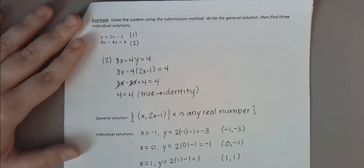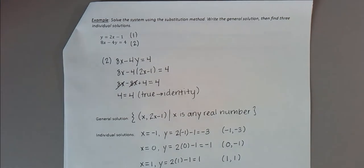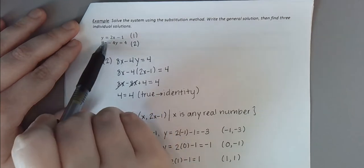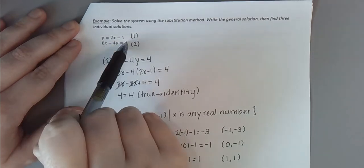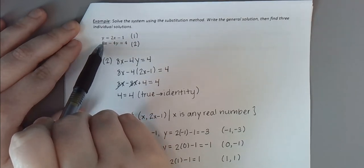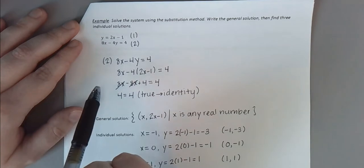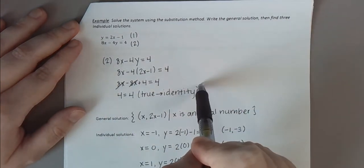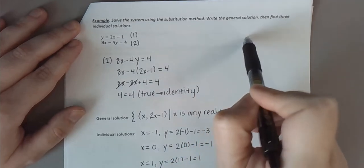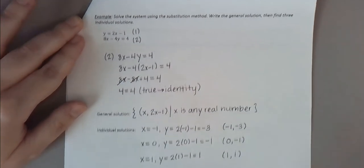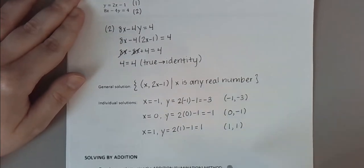Graphically: if the system is consistent with independent equations, the two lines intersect at one ordered pair. If inconsistent, the lines are parallel and never intersect. In the dependent case, because the two equations are algebraically equivalent, their graphs are literally the same line — one on top of the other. Every ordered pair on that common line is a solution, and these are three of the ordered pairs that appear on that line.